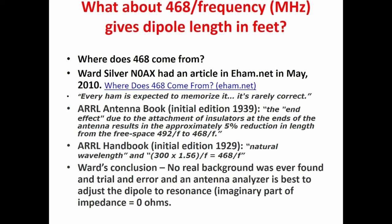The 1939 book described a five percent reduction from a half wavelength in free space, whose formula is 492 over frequency. Some of you probably remember that formula. To get 468, you take 0.95 — that's 5% less. It was said this was due to the insulators at the end of the dipoles, and that concept was carried through for a long time. In the 1929 handbook he found a formula, but there was nothing that said where it came from.